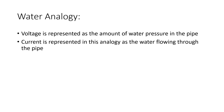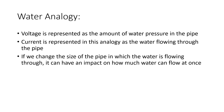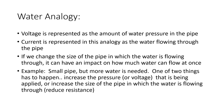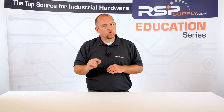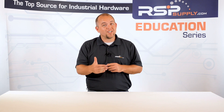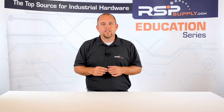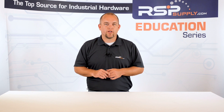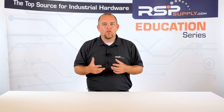One thing we should keep in mind: if we change the size of the pipe in which water is flowing through, it can have an impact on how much water can flow at one time. So, for example, if you have a smaller pipe but need more water, you would have to do one of two things — either increase the pressure, or voltage in electrical terms, being applied to the water, or you would have to increase the size of the pipe. The size of the pipe in this analogy is represented as electrical resistance. In short, electrical current is the movement of electrons through a conductor in a circuit. It is also important to note that the current is directly related to the amount of voltage or electrical pressure in a circuit. The amount of current flow is also impacted by the amount of resistance seen in an electrical circuit, or in our water analogy, the size of the pipe the water can flow through.